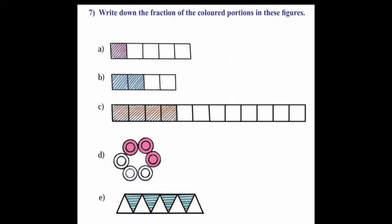Write down the fraction of the colored portion in these figures. A, 1, 2, 3, 4, 5. 5 ali 1 is shaded. So that is 1 by 5. B, 4 parts, 2 are shaded. So that is 2 by 4.